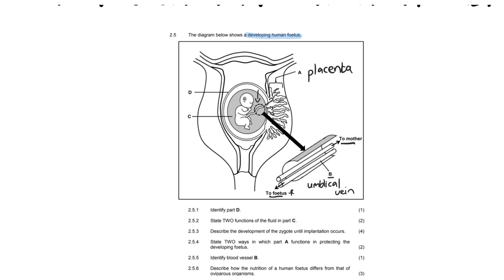Moving on to labels C. Now, C is in reference to what appears to be this fluid that the embryo is floating in, and that is going to be amniotic fluid.